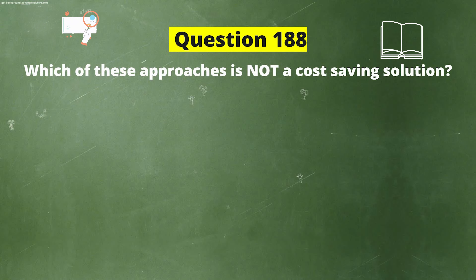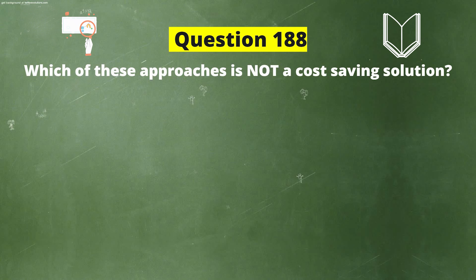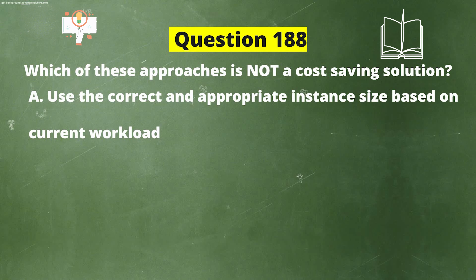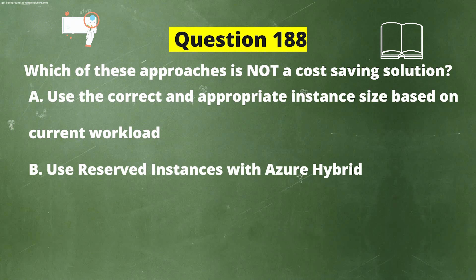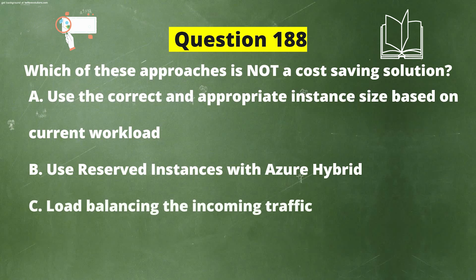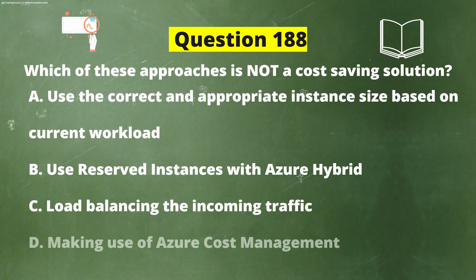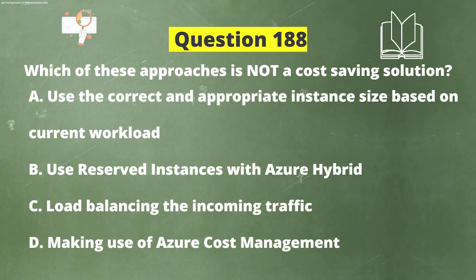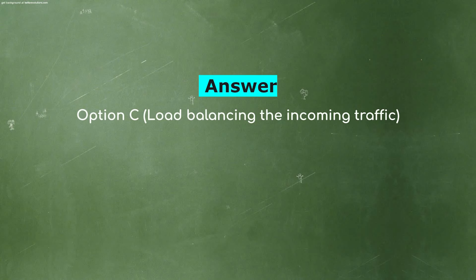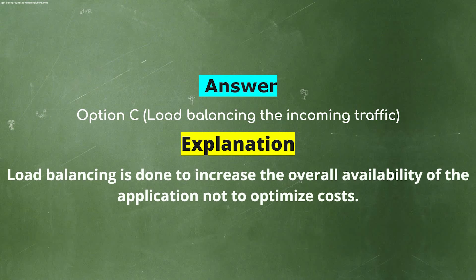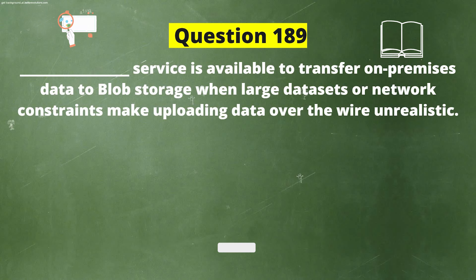Next question: Which of these approaches is NOT a cost-saving solution? The options are: A) Use the correct and appropriate instance size based on current workload, B) Use reserved instances with Azure Hybrid, C) Load balancing the incoming traffic, D) Making use of Azure Cost Management. The correct answer is option C: Load balancing the incoming traffic. Explanation: Load balancing is done to increase the overall availability of the application, not to optimize cost.